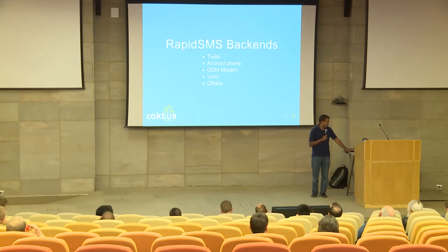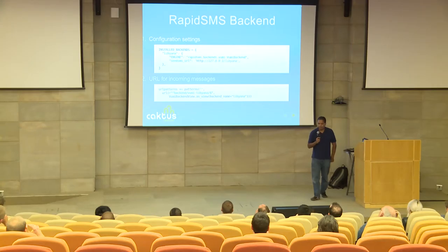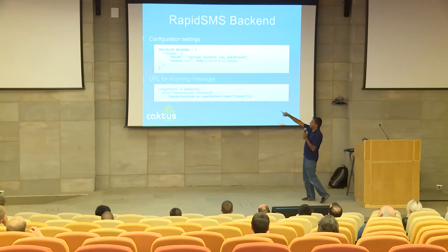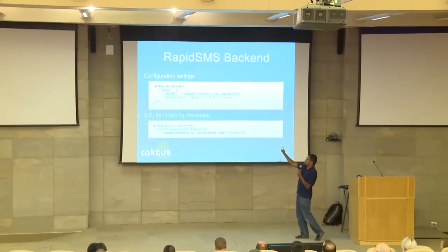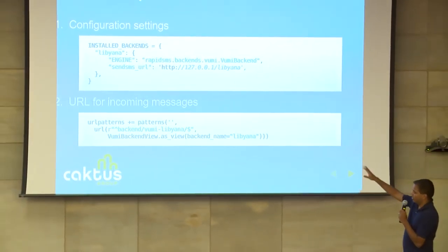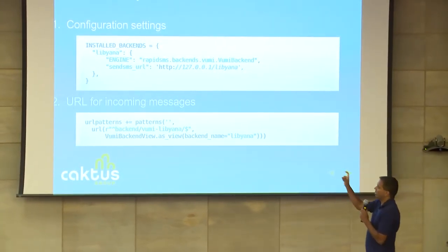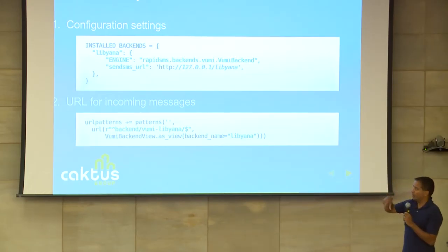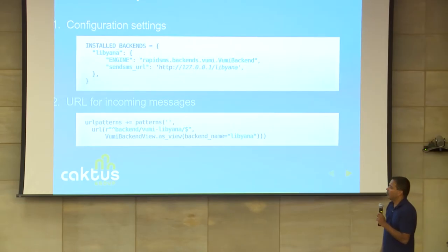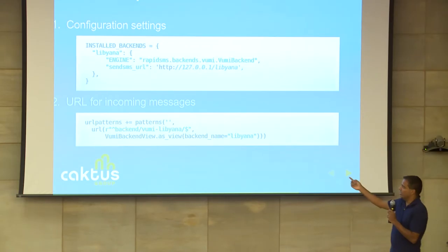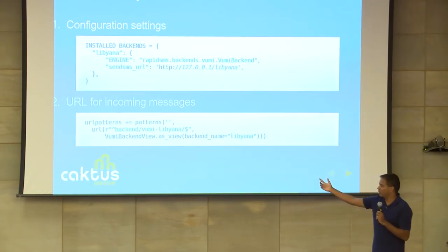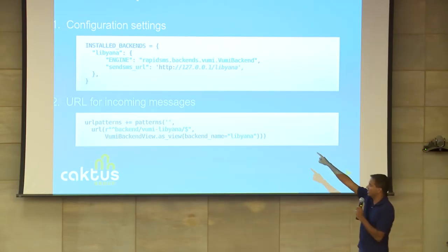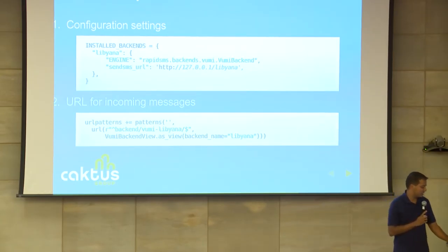To set up RapidSMS there are basically two settings you need. In your Django settings you define something called installed back-ends, give that back-end a name — Libiana was one of the mobile network operators we used. Every back-end needs an engine, which is just a Python class — this one is built into RapidSMS. Vumi specifically needs a URL that tells RapidSMS where Vumi is located. For sending messages out, that's the URL Vumi will accept messages at. If you want to get messages into your system, you need a Django URL — point that to a view built into RapidSMS, and give it a name which links to the installed back-end. With those two settings you'd have a working back-end.